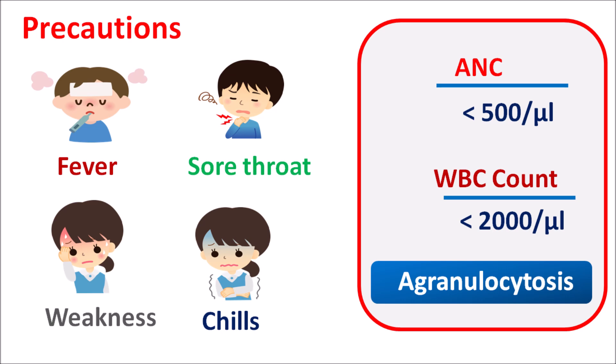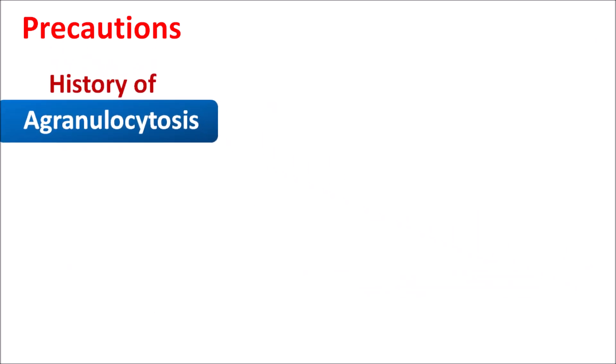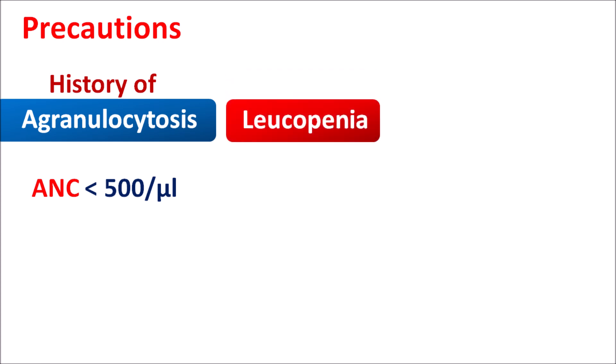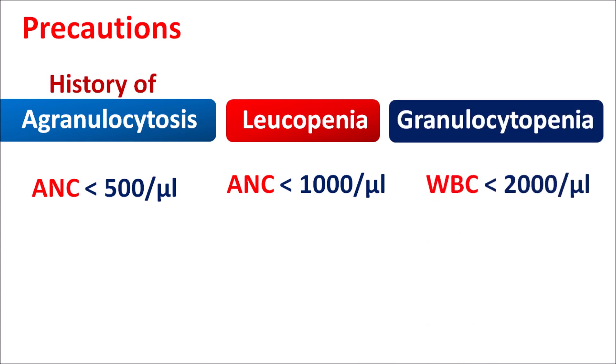Clozapine should be carefully given to patients with a history of agranulocytosis where ANC levels are less than 500 cells per microliter, or in patients with leukopenia where ANC is less than 1,000 cells per microliter, or granulocytopenia where WBC count is less than 2,000 cells per microliter. In all these conditions, clozapine should not be used and should be immediately stopped to prevent further development of agranulocytosis.